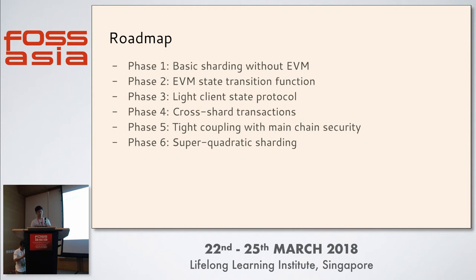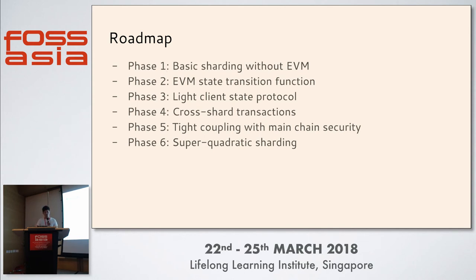The spec just introduced is the old one; the new spec is becoming more complicated. Phase one basically doesn't care about the execution of transactions. In phase two we add execution back, allowing transactions to be executed. Phase three is the client state protocol. Phase four implements cross-shard transactions — this is a hard problem still being figured out.